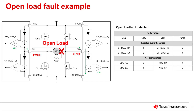In this open load fault example, the load is connected to SHX but disconnected from SHY. The SHX voltage sits at supply value while the SHY voltage sits at ground. Since the top left and bottom right comparators do not have a positive difference between their terminal voltages, their outputs are low. The top right and bottom left comparators do have a positive difference, so their outputs are high. In this case, the comparator outputs can be interpreted as a fault.